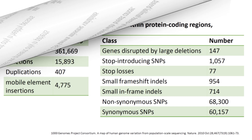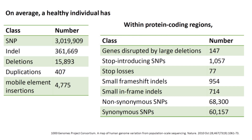Analysis of the whole genomes of over 1,000 healthy individuals in the 1000 Genomes Project revealed that on average a healthy individual carries over 3 million SNPs, over 361,000 indels, almost 16,000 deletions, over 400 duplications, and almost 5,000 mobile element insertions. Within protein coding regions, on average a healthy individual carries large deletions disrupting about 150 genes, over 1,000 stop-gain SNPs, 77 stop-losses, over 900 small frameshift indels, nearly 70,000 non-synonymous SNPs, and 60,000 synonymous SNPs.